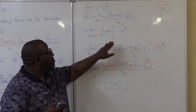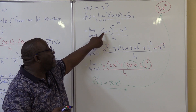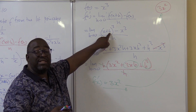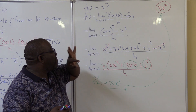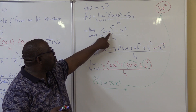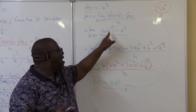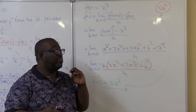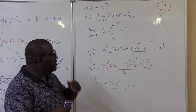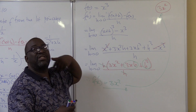Let me remind you how to expand a cube. Step 1: multiply the first term by itself 3 times. Step 2: multiply the first term by itself, then by the second term, then multiply by 3. Step 3: multiply the first term once and the second term twice to get h squared, then times 3 — giving 3h squared. Step 4: multiply the second term by itself 3 times to get h cubed. You don't have to open x plus h into x plus h into x plus h as in grade 8 — just do this by inspection.